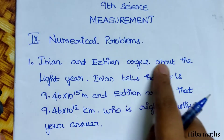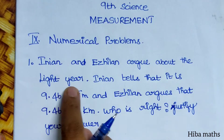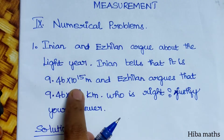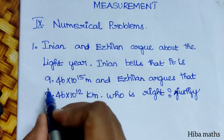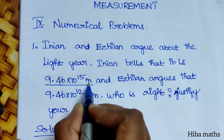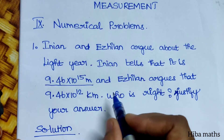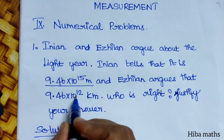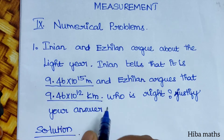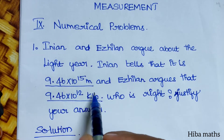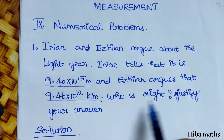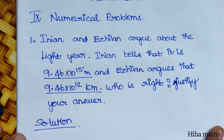Indian and Aryan argue about the light year. Indian tells that it is 9.46 into 10 power 15 meters — he gives the value in meters. Aryan argues that it is 9.46 into 10 power 12 kilometers. The two people are using different units. Who is right? Justify your answer.